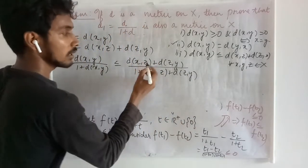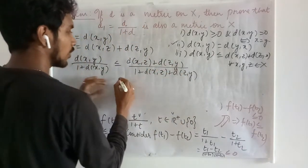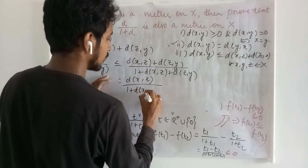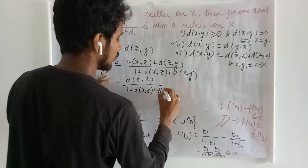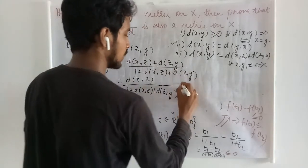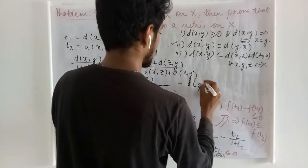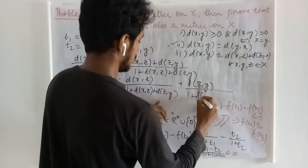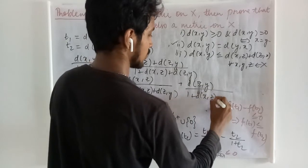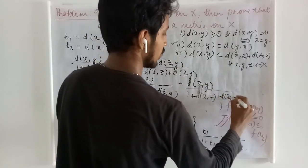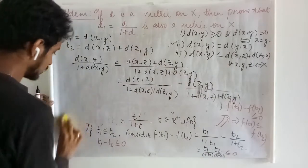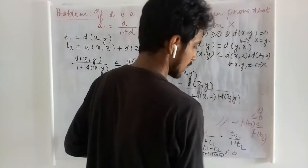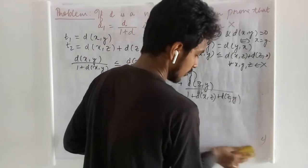Now the numerator on the right has two parts. Therefore it can be written as D(x,z) upon 1 plus D(x,z) + D(z,y) plus D(z,y) upon 1 plus D(x,z) + D(z,y). With a simple mathematical idea, we will establish the triangle inequality for this case.